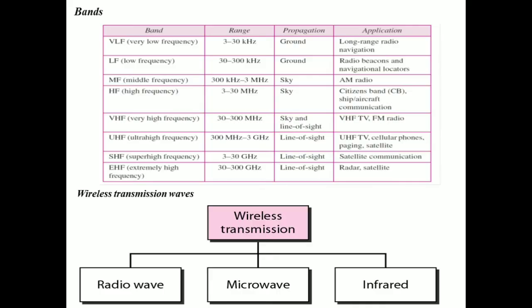Here are the different frequency bands. The very low frequency band ranges from 3 to 30 kilohertz, uses ground propagation, and its application is long range radio navigation. The low frequency band ranges from 30 to 300 kilohertz, uses ground propagation, and is used for radio beacons and navigational locators, among other band types.